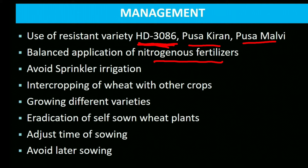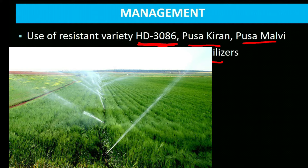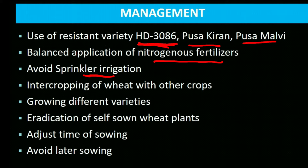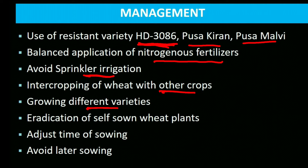Avoid sprinkler irrigation — it increases humidity in the crop canopy, increasing infection. Intercropping wheat with other crops reduces pathogen movement within the field. Growing different varieties across a large area prevents a single pathogen race from affecting the entire area. Eradicate self-sown wheat plants that have no economic value.